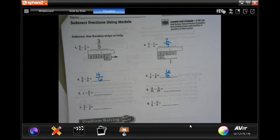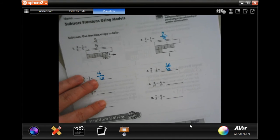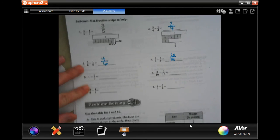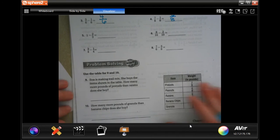We're going to go ahead and go down to the table there on number 9. And it says, Ena's making trail mix. She buys the items shown on the table. How many more pounds of pretzels than raisins? So, how many more pounds? That means that we are subtracting to find the difference.